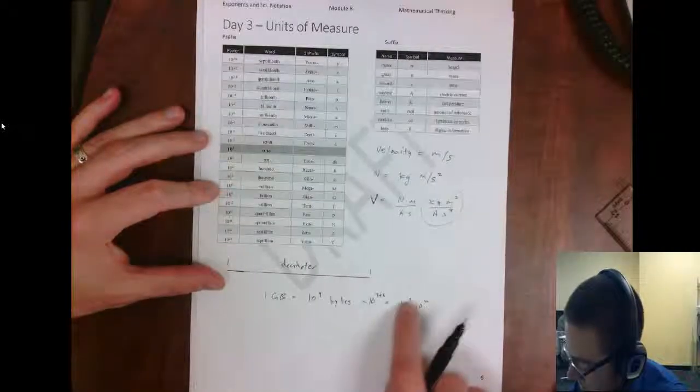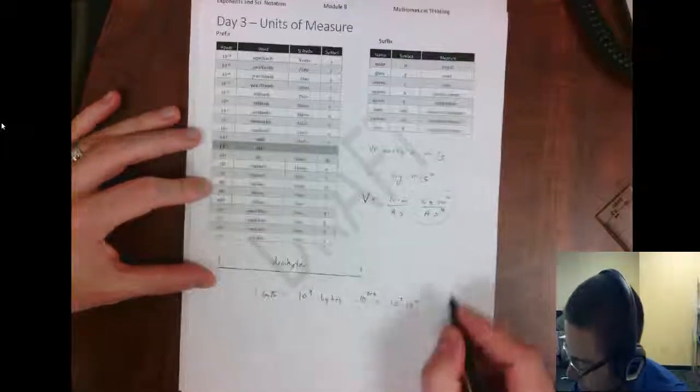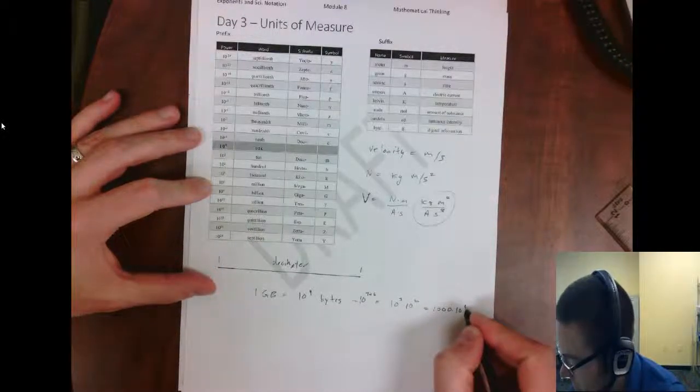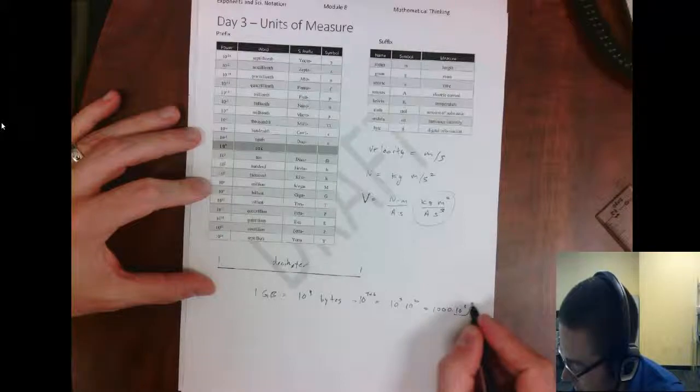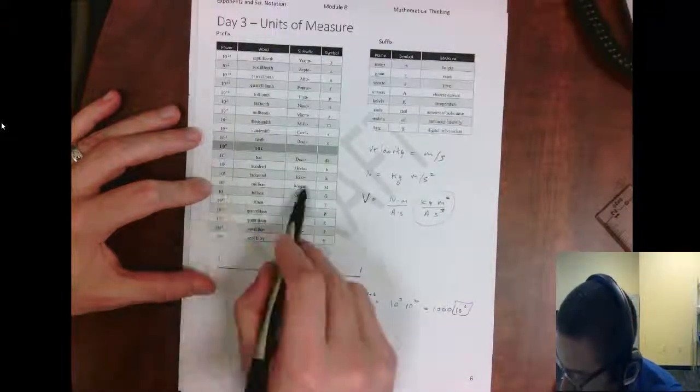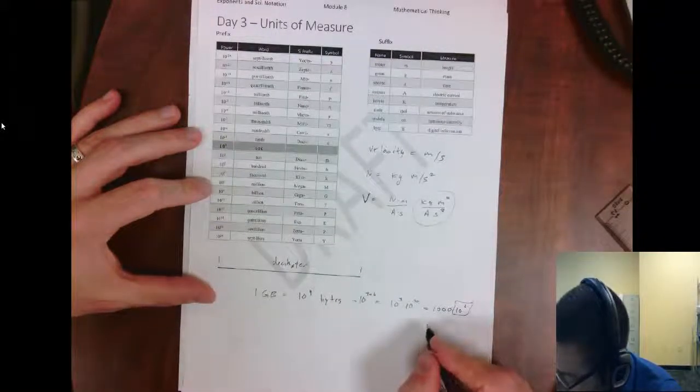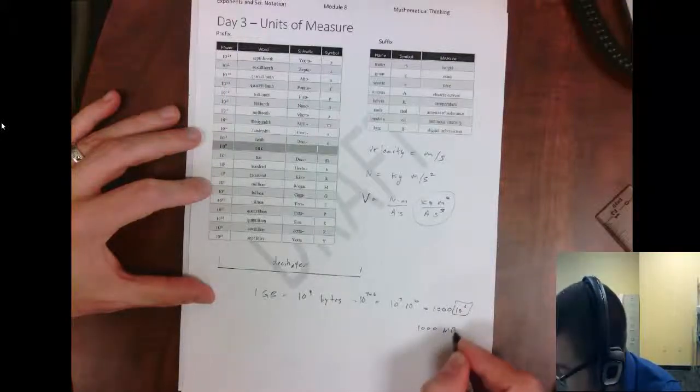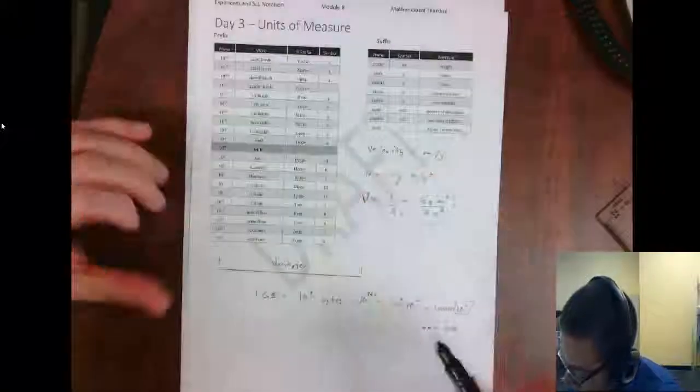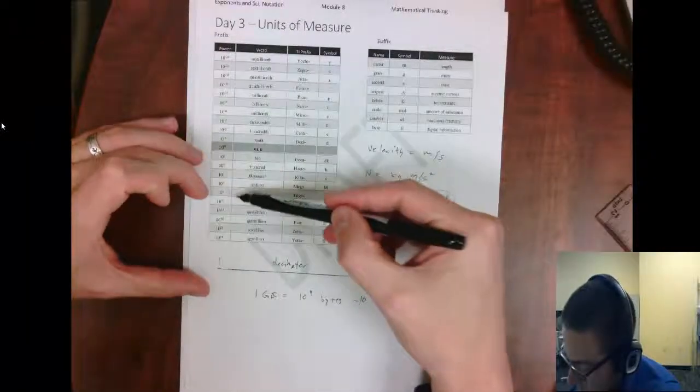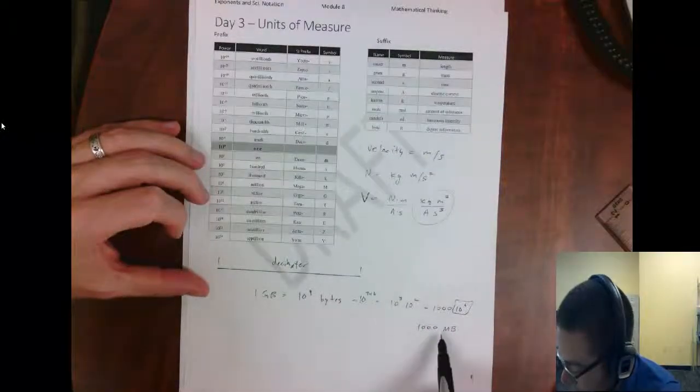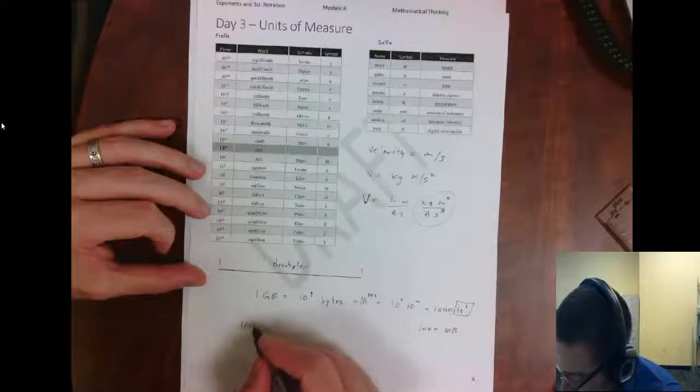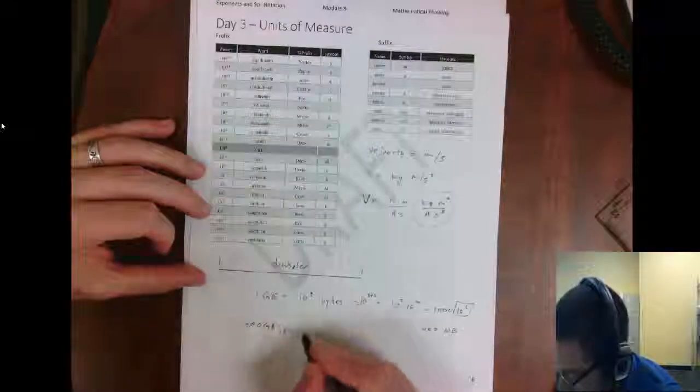And then I break this, ten to the third is a thousand. So it's a thousand times ten to the sixth. So it's a thousand, and ten to the sixth is mega. So one gigabyte is a thousand megabytes. So if it's three away, you can see it goes up to the next level. There's a thousand megabytes in one gigabyte. There would be a thousand gigabytes in one terabyte.